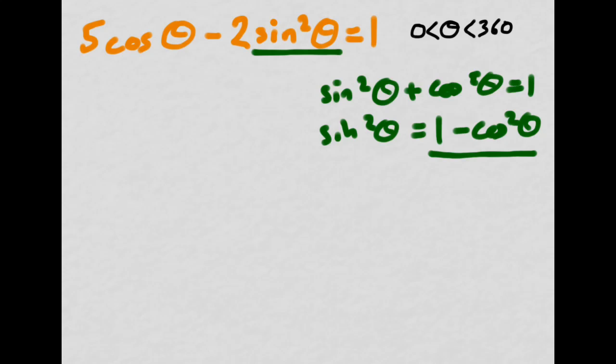And doing so, the equation becomes 5 cosine theta minus 2 times, obviously I'm going to need to write this in brackets, 1 minus the sine squared of theta is equal to 1 cosine squared of theta even.